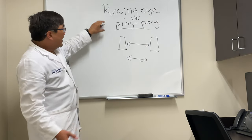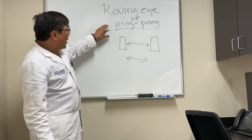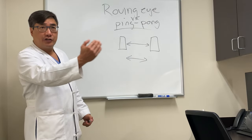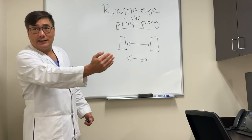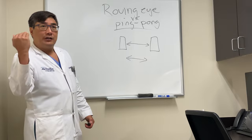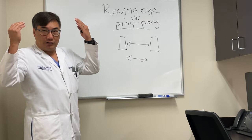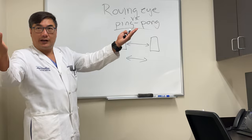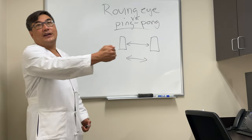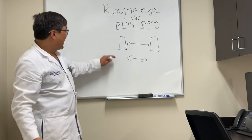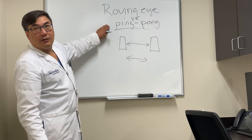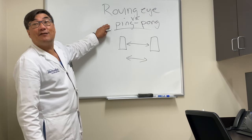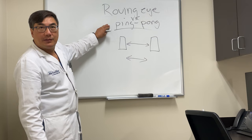They're both bad, but roving eye movements normally occur in patients who have no vision. Ping-pong is usually a muscle problem from neurogenic disconnection at the level of the brainstem — your eyes are going back and forth because there's no signal from above. The supranuclear centers have been cut off and it's just firing by itself. So ping-pong has the worst prognosis. Roving usually means vision loss; ping-pong usually means an efferent brainstem problem.